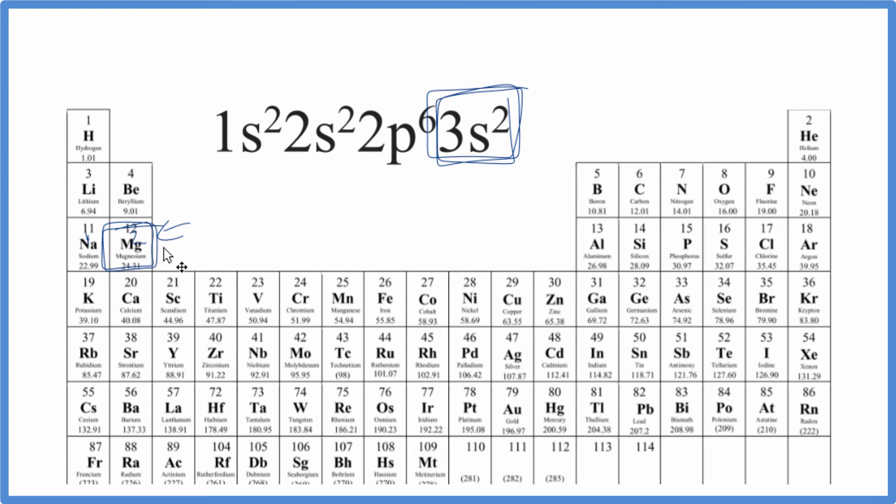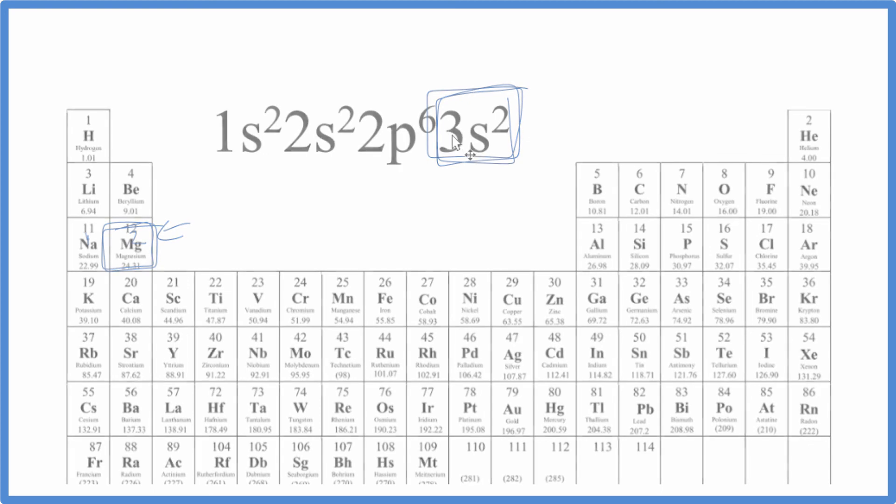The electron configuration for magnesium on the periodic table ends in 3s². This is Dr. B, and thanks for watching.